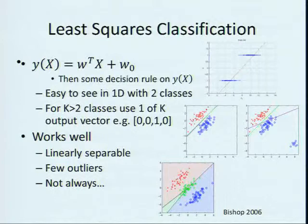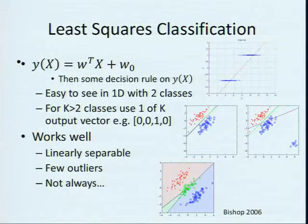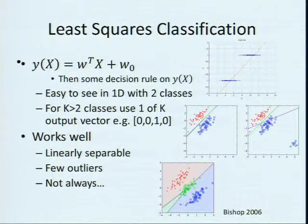It's easiest to visualize with one-dimensional input and two classes with labels plus one and minus one. The decision threshold would be zero. You fit a line to the data, and any new input is projected onto the output with the line. If the output is less than zero, it is assigned the minus one class. This places the decision boundary at x1 equals eight. So anything below eight would be class two, anything above eight would be class one. In two dimensions it's like fitting a plane, and so on.